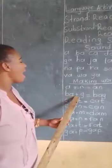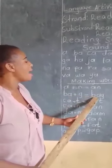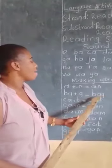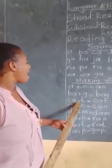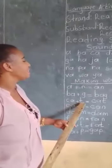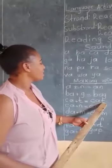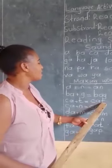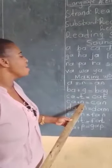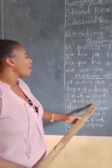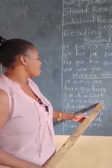Ba plus d — we get bag. Bag. Ka plus d plus t — we get cat. Cat. Ka plus d plus n — we get can. Can.